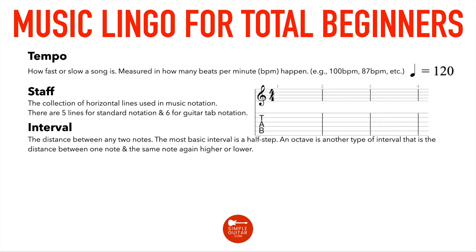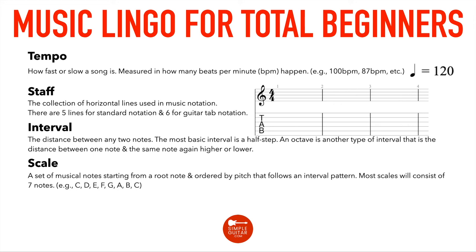A scale is a set of musical notes starting from a root note — another word for root note is 'tonic' — ordered by pitch that follows an interval pattern, a specific pattern of spaces between each note. Most scales consist of seven notes. For example, the C major scale has the notes C D E F G A B C.